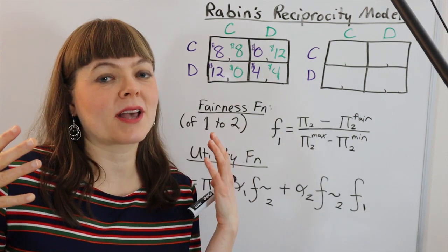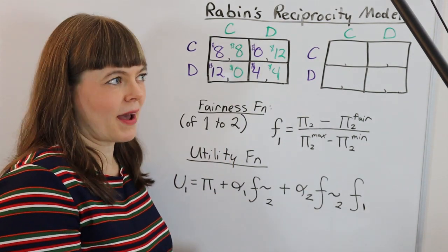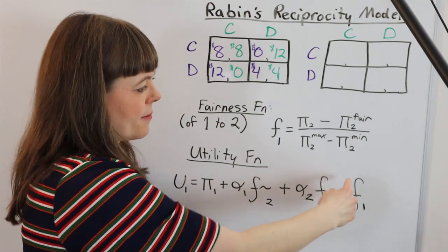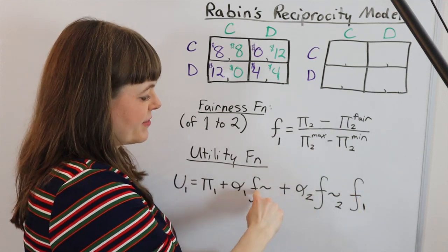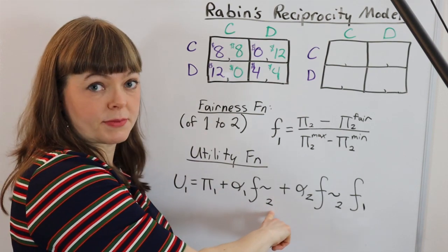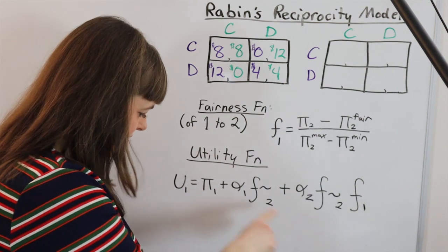Now we're going to add the squiggly line when that fairness is actually a perception from the other person, because of course people can misperceive whether someone's being mean to them by adding their own interpretation. So f1 is how fair player one is to player two. F squiggle two is how fair player one perceives player two to be.